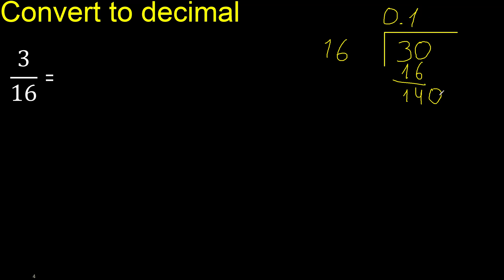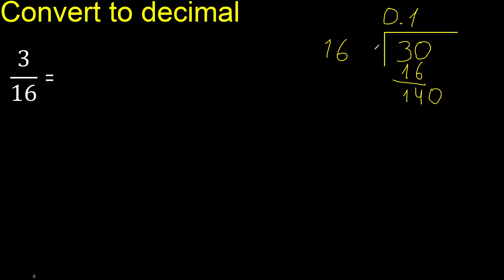Point is here. 140. 16 — multiply by which number? 16 multiply by 9 is 144, it's greater. Multiply by 8 is 128. Subtract — it's 12. There is no number that goes down, therefore complete — always complete with 0.